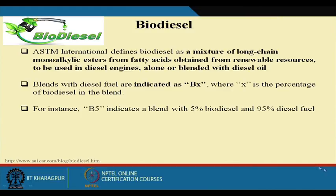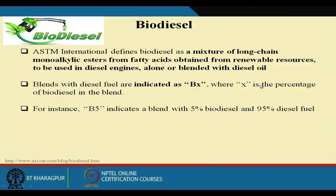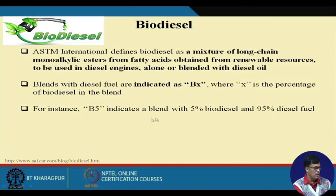If you look at biodiesel, the ASTM International defines biodiesel as the mixture of long chain mono-alkyl esters of fatty acids obtained from renewable resources, to be used in a diesel engine alone or blended with diesel oil. It can be used in combination or separately. The blend with diesel is indicated as BX, where X means the percentage of biodiesel in the blend. For instance, B5 indicates a blend of 5 percent biodiesel and 95 percent diesel fuel.